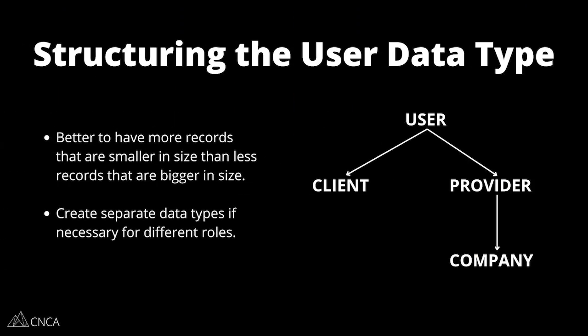With our example of clients and service providers, users will have a user record because they need their email and password to get into the app. But once we identify who they are, the rest of the information specific to them can be stored elsewhere. We can store client information in a client record, provider information in a provider record, and you can have relationships to other data from there. Providers might be tied to a company with many employees — multiple providers working as a team. And users can be both a client and a provider, meaning you'd have both a client and provider record for that one individual. This helps Bubble with the performance of searches and how you display results back to the user.